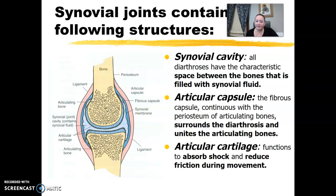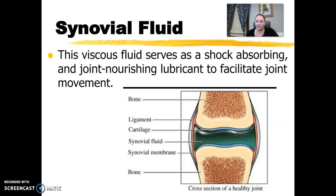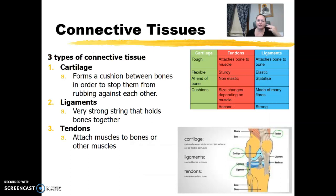The synovial joints have a cavity and capsule — terminology you might see coming up. The synovial cavity is the space between the bones filled with synovial fluid, hence the synovial joint. The articular capsule is fibrous; it surrounds the diarthrosis and connects to the articulating bones. The articular cartilage absorbs shock and reduces friction during movement. Synovial fluid is our main player here — it allows the joint to move freely and absorb shock as we move. The three types of connective tissue relevant to arthrograms are cartilage, ligaments, and tendons.